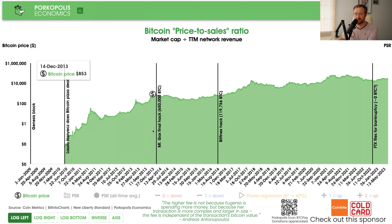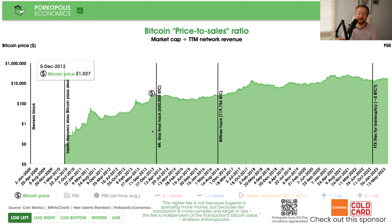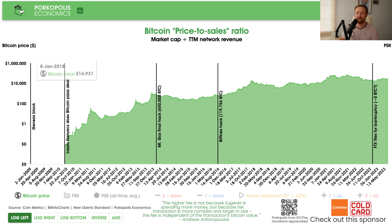We can do a PSR for Bitcoin. How would it be calculated? Basically market cap divided by the trailing 12-month revenue. The trailing 12-month revenue right now is about $8 billion — that's transaction fees plus the block reward every day, rolled over a 365-day period by the price of Bitcoin at that day, giving you a dollar value, which is Bitcoin's network revenue, or miner revenue. That number has been as high as $15–16 billion dollars; right now it's about $8 billion.